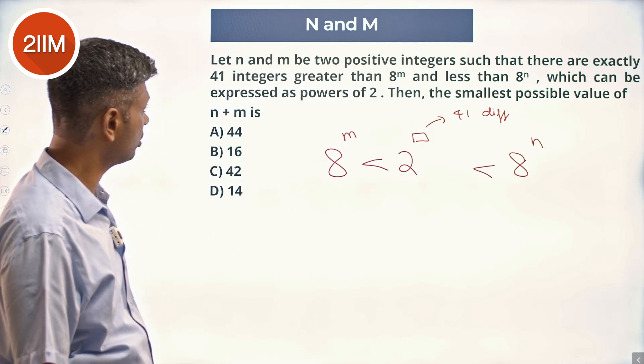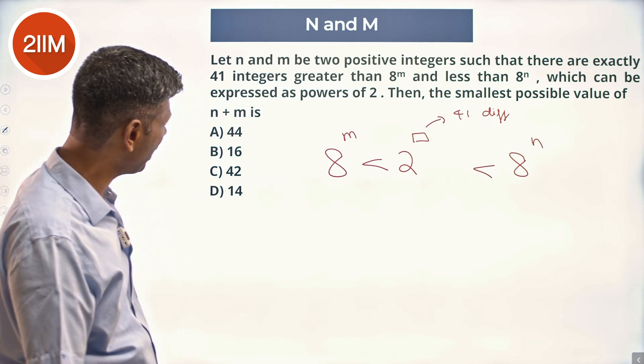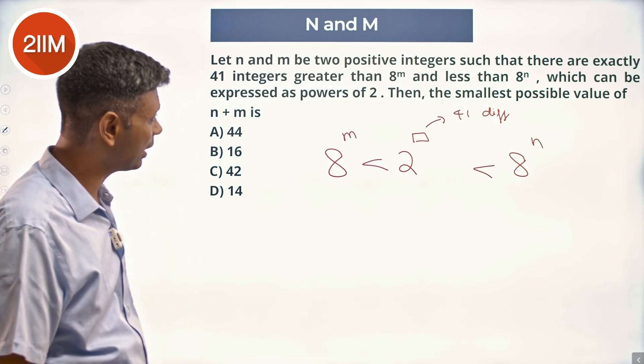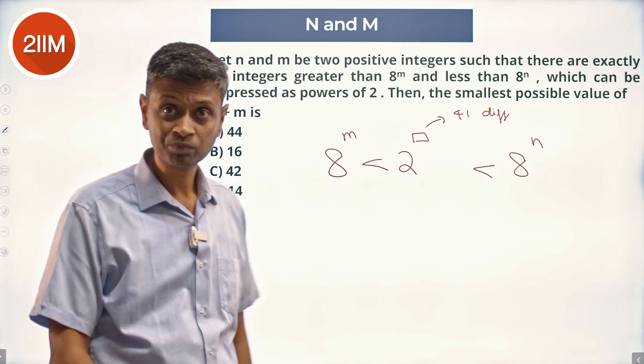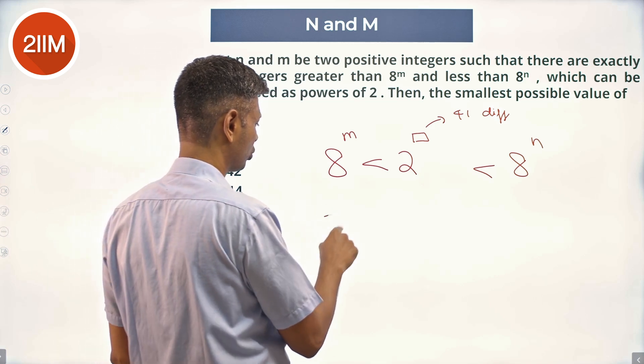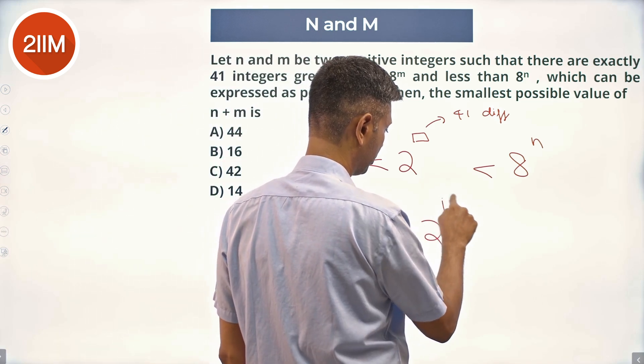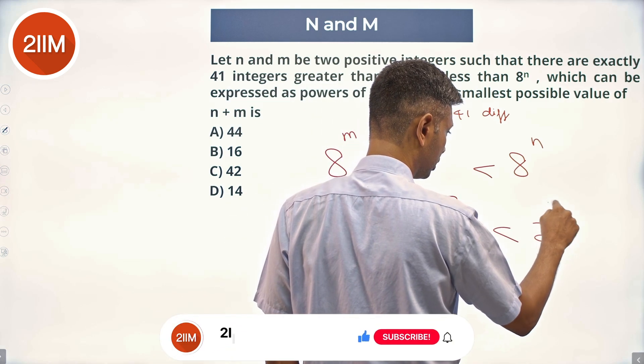Then the smallest possible value of n plus m is? So 8^m and 8^n - in between these two, a bunch of powers of 2 are sitting there. First of all, this is 2^(3m) less than 2^something, less than 2^(3n).